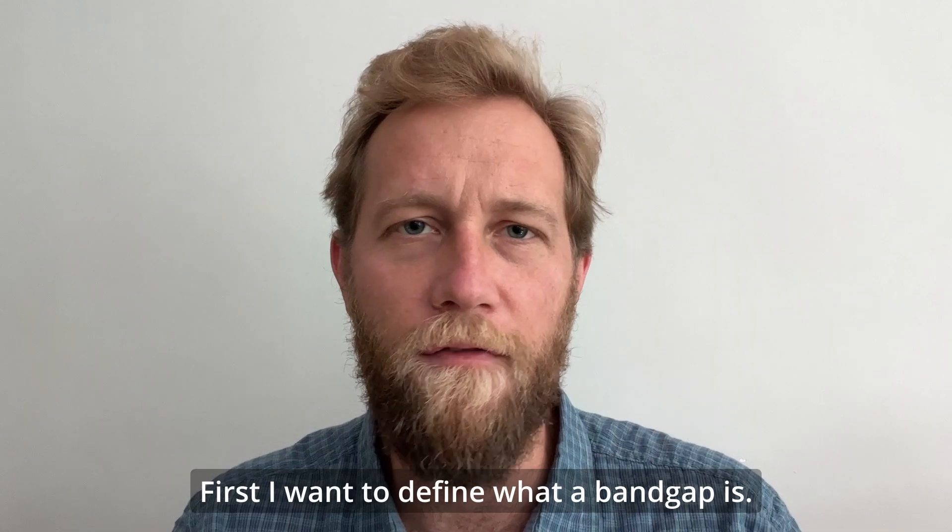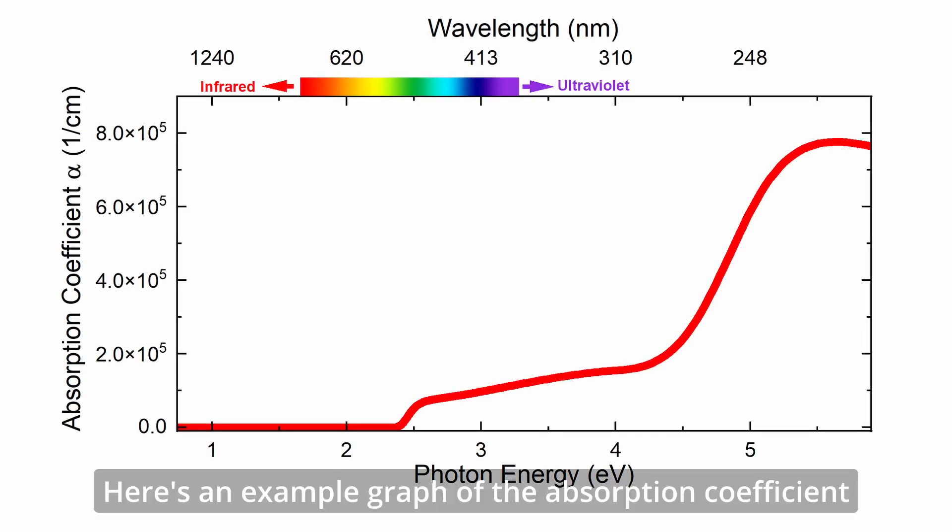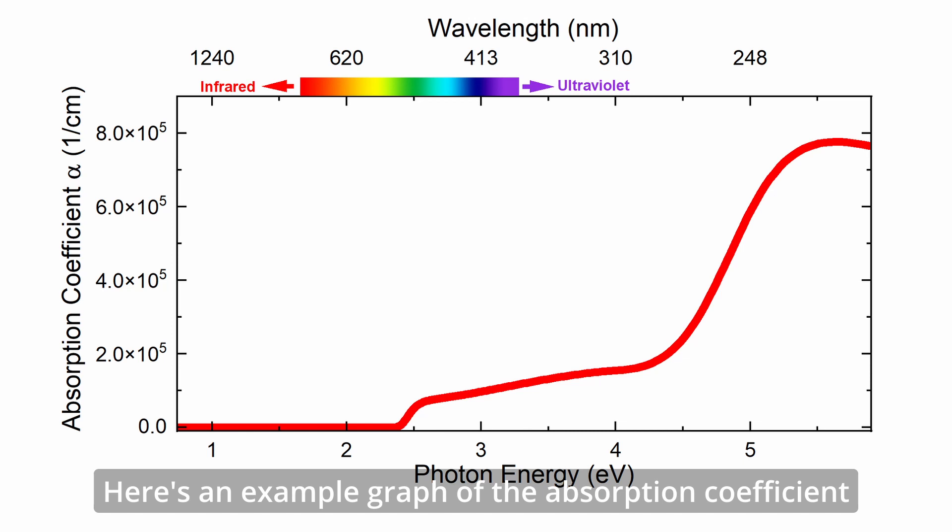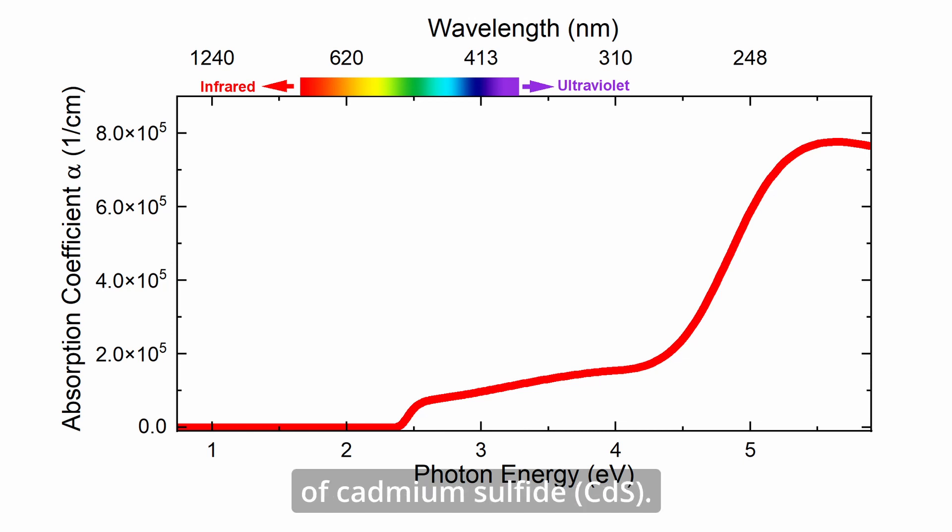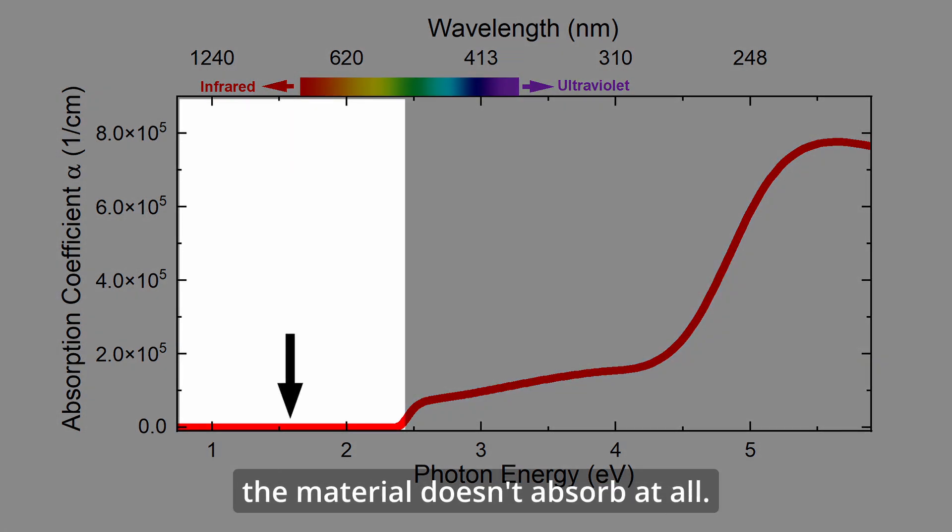First, I wanted to define what a band gap is. Here's an example graph of the absorption coefficient of cadmium sulfide. The absorption coefficient is simply a measure of how strongly a material absorbs light. When it's zero, it means that the material doesn't absorb at all.